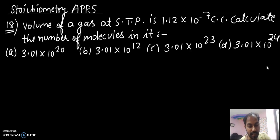In this problem, given data is volume of a gas at STP is 1.12 × 10^-7 cubic centimeter. Calculate the number of molecules.